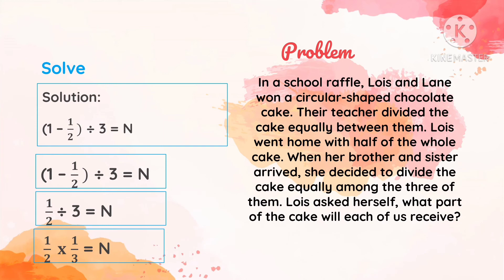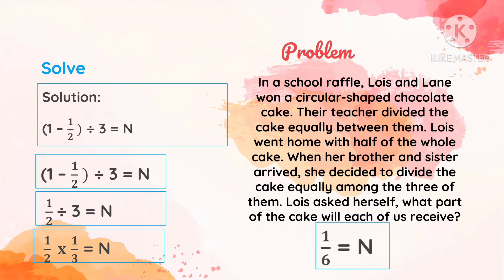We change the division symbol to a multiplication symbol, then proceed to multiplying fractions. So 1 times 1 is 1, and 2 times 3 is 6. Therefore, n is equal to 1 over 6.